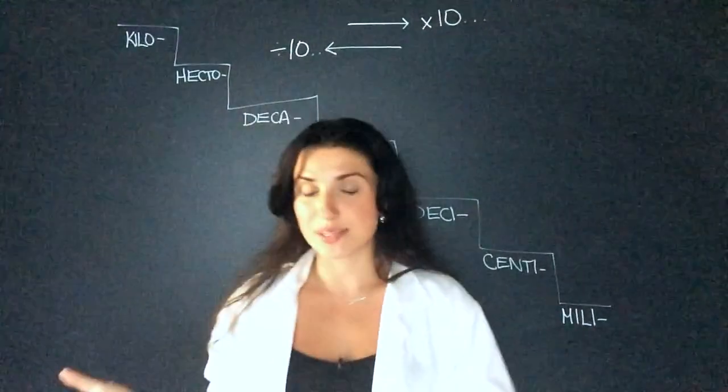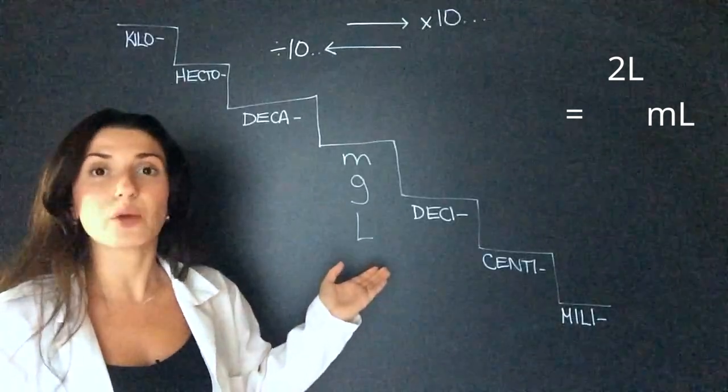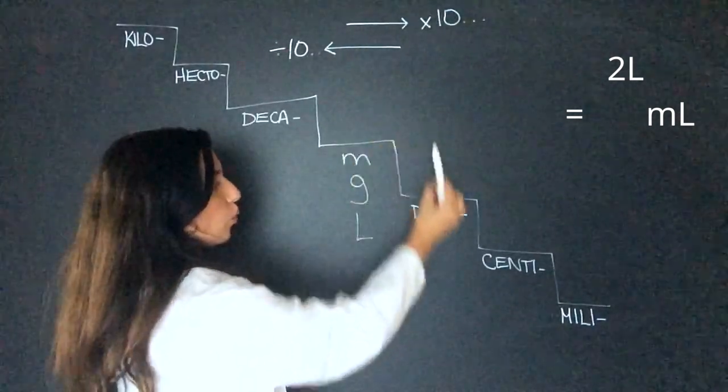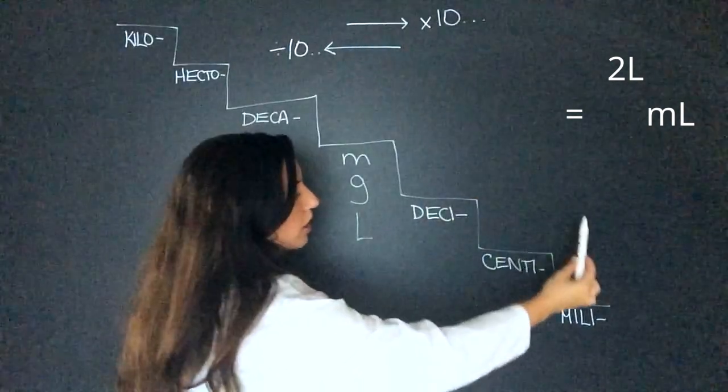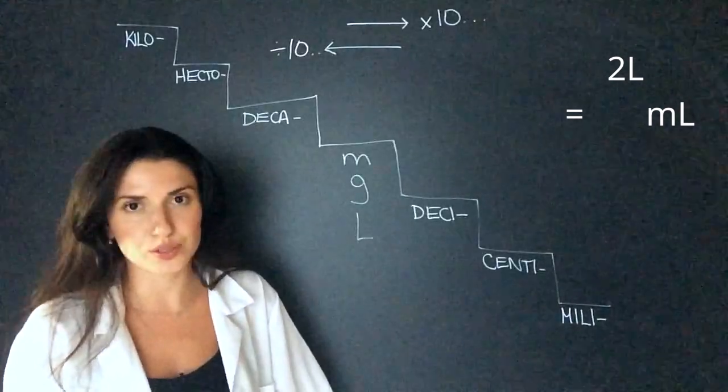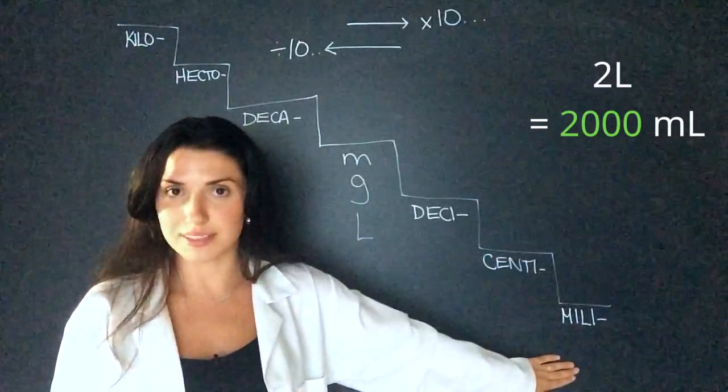So let's try some practice problems together. Let's say I have two liters and I want that to be in milliliters. So I'm going to go one, two, three. So I multiply by 1000 or add three zeros to two. So two liters is 2000 milliliters.